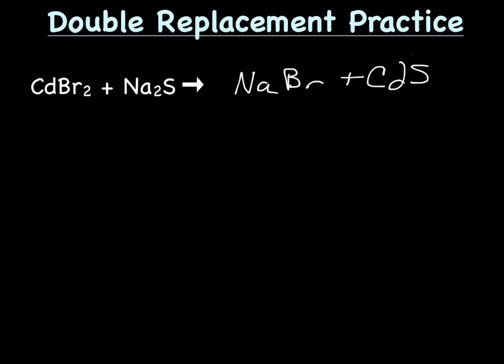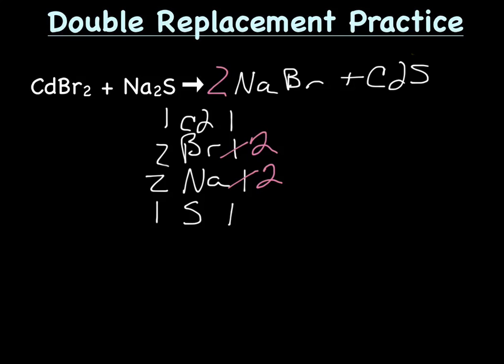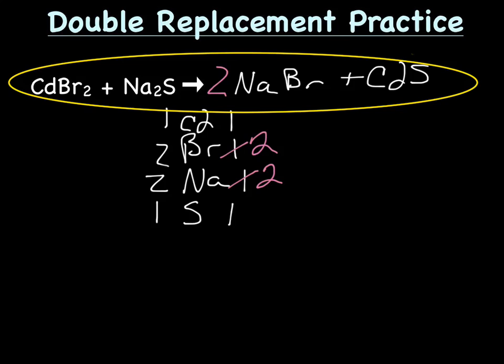And, the last step is to balance the equation. So, we have cadmium, bromine, sodium, and sulfur. And, on the reactant side, we have 1 cadmium. We have 1 on the product side. Bromines, 2 on the reactant side, 1 on the product side. Sodiums, we have 1 on the reactant side, 1 on the product side. And, sulfurs, 1 on the reactant side, and 1 on the product side. So, to fix this, cadmium, good. Bromine, not so much. There's 2 on the reactant side. So, let's put a 2 on the product side in front of NaBr, which changes our Na's to 2, and our bromine's to 2. And, there you go.